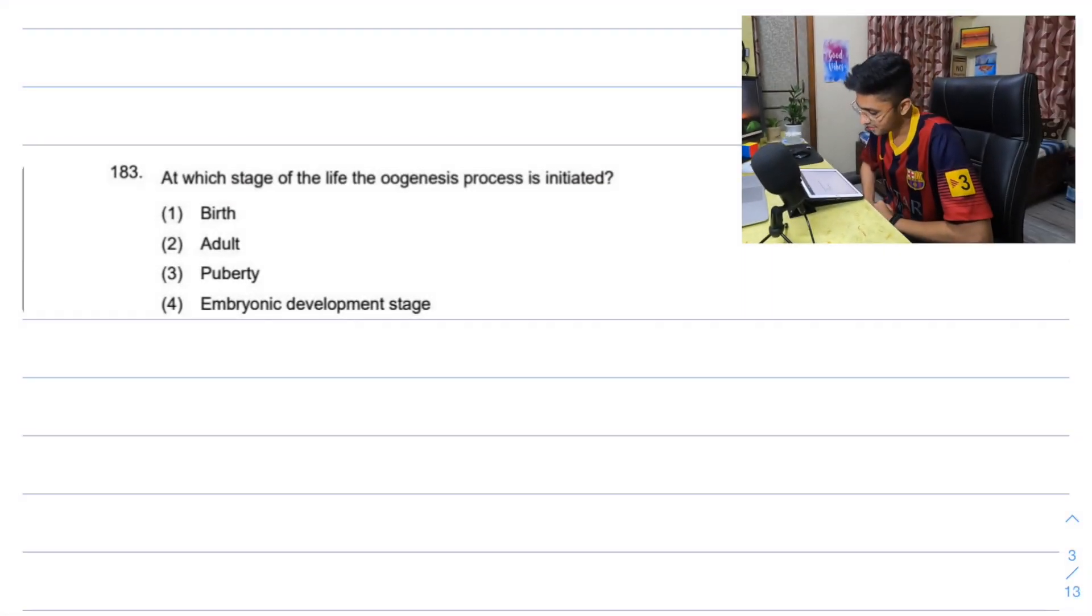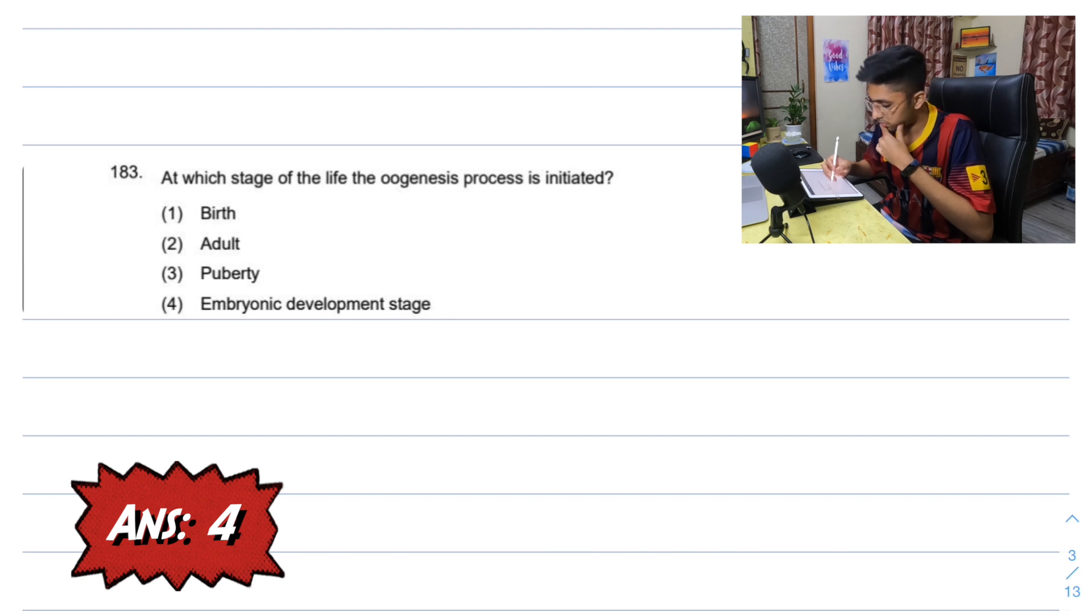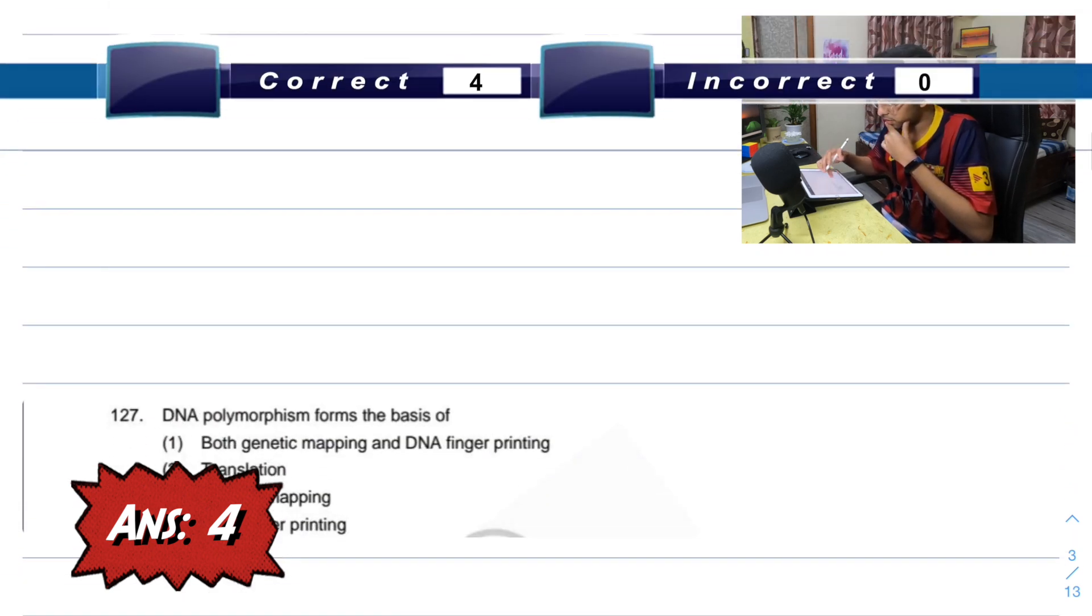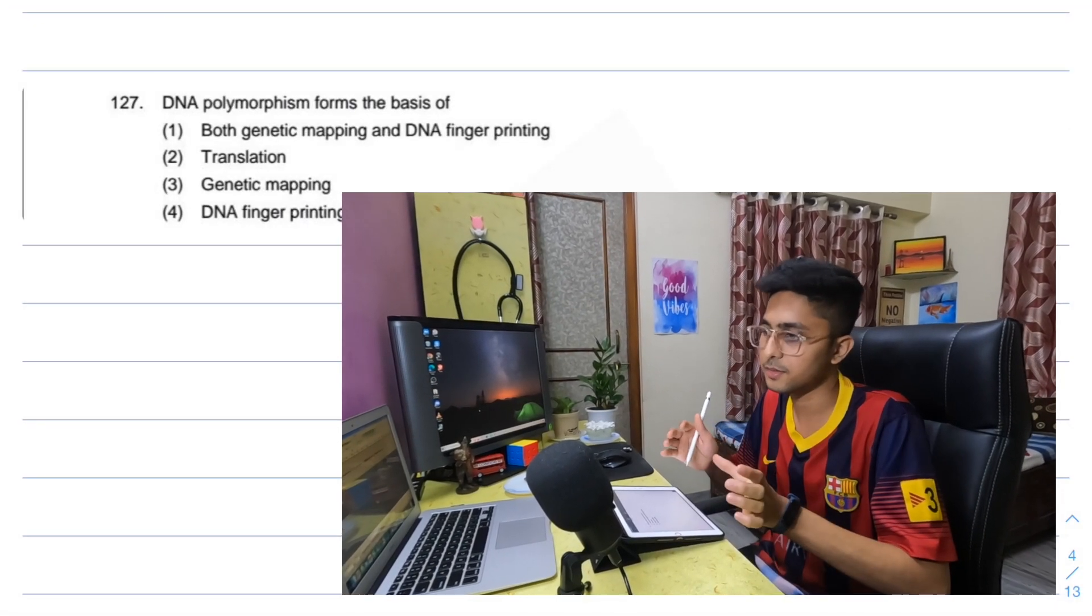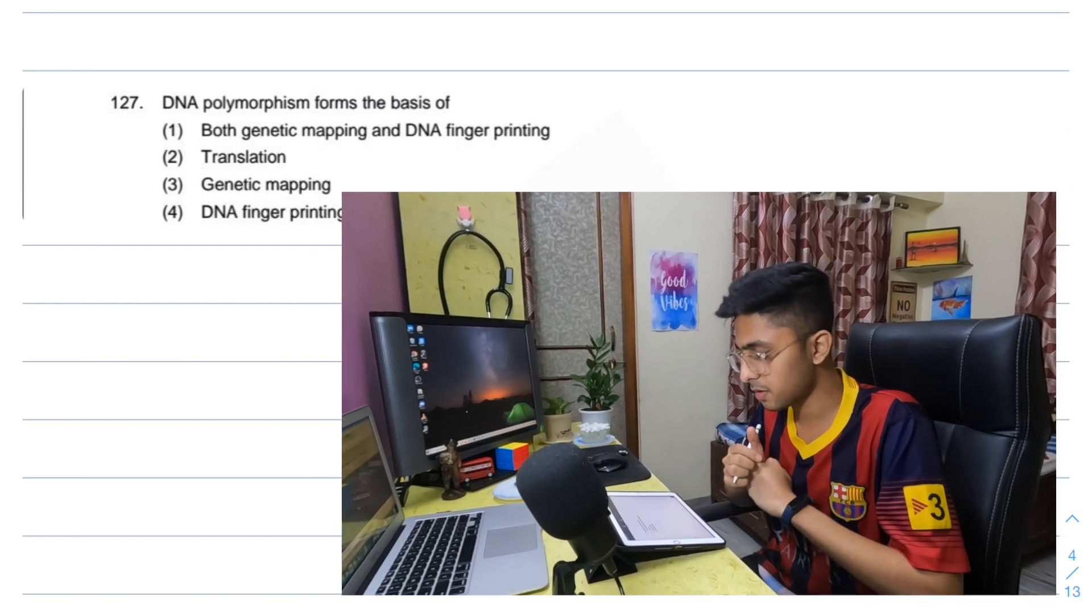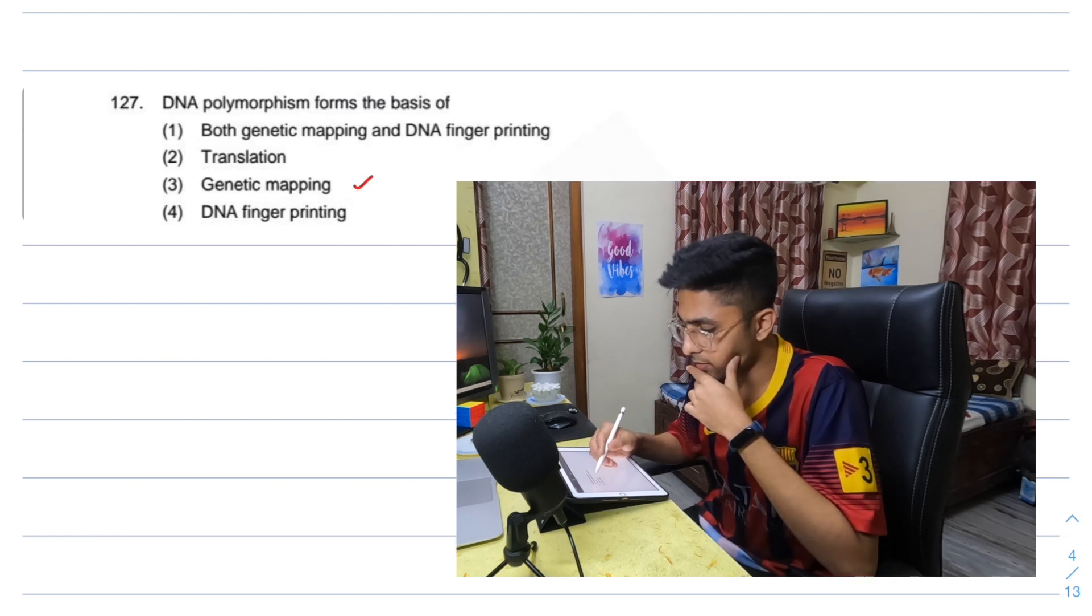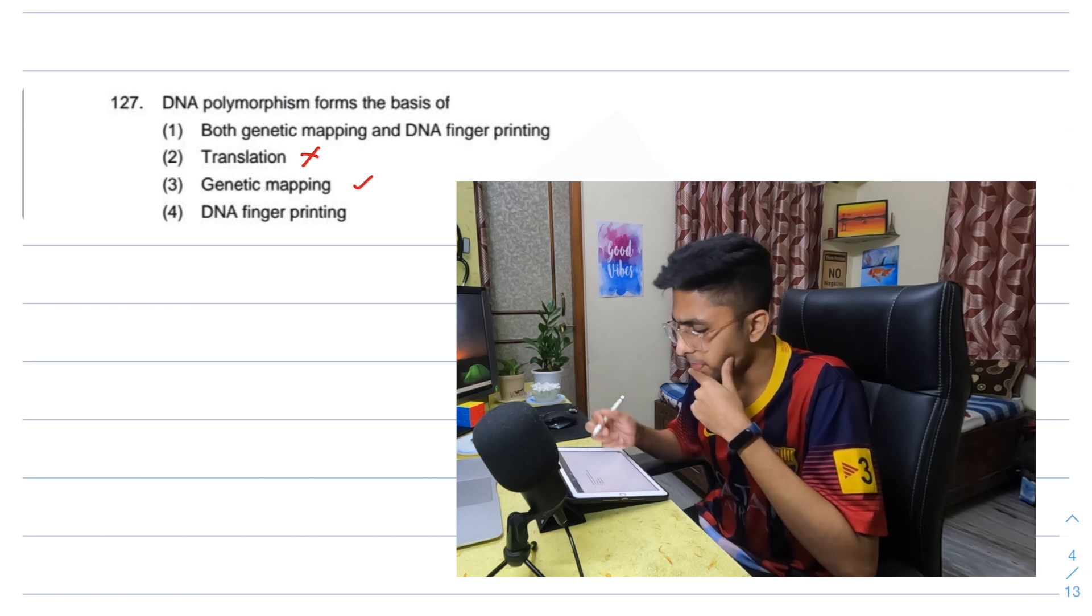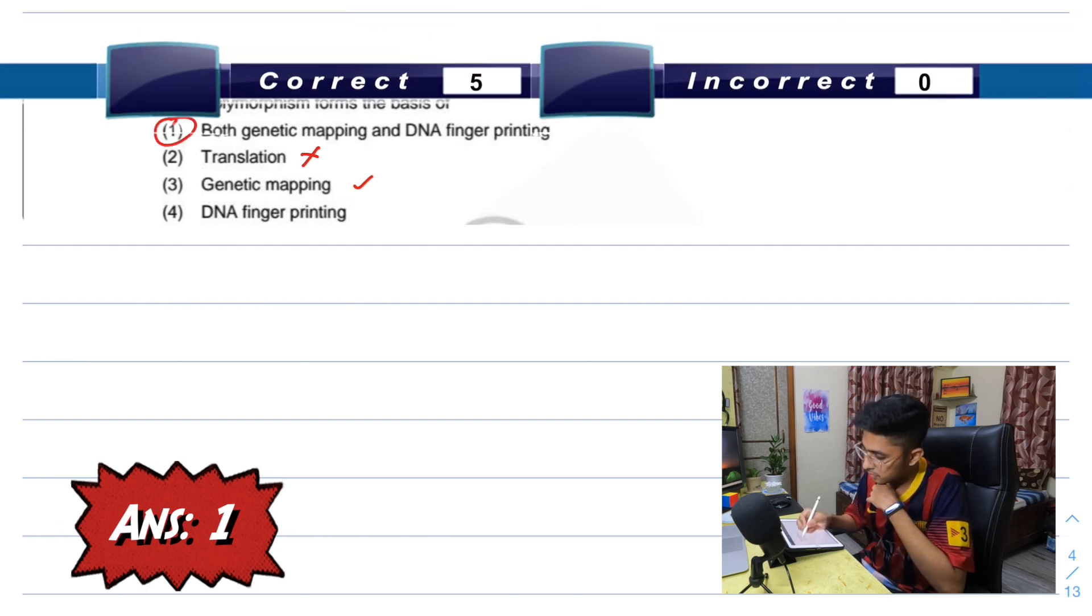At what stage of the birth is the oogenesis process initiated? Oogenesis is the formation of eggs in the female, so the female germ cells. That's before birth. The most likely is embryonic developmental for me. DNA polymorphism forms the basis of - DNA polymorphisms is like different specific kinds of sequences. Genetic mapping can be done. Yes. DNA fingerprinting - people have specific polymorphisms in the DNA sequence. So I'll go for both, option one.